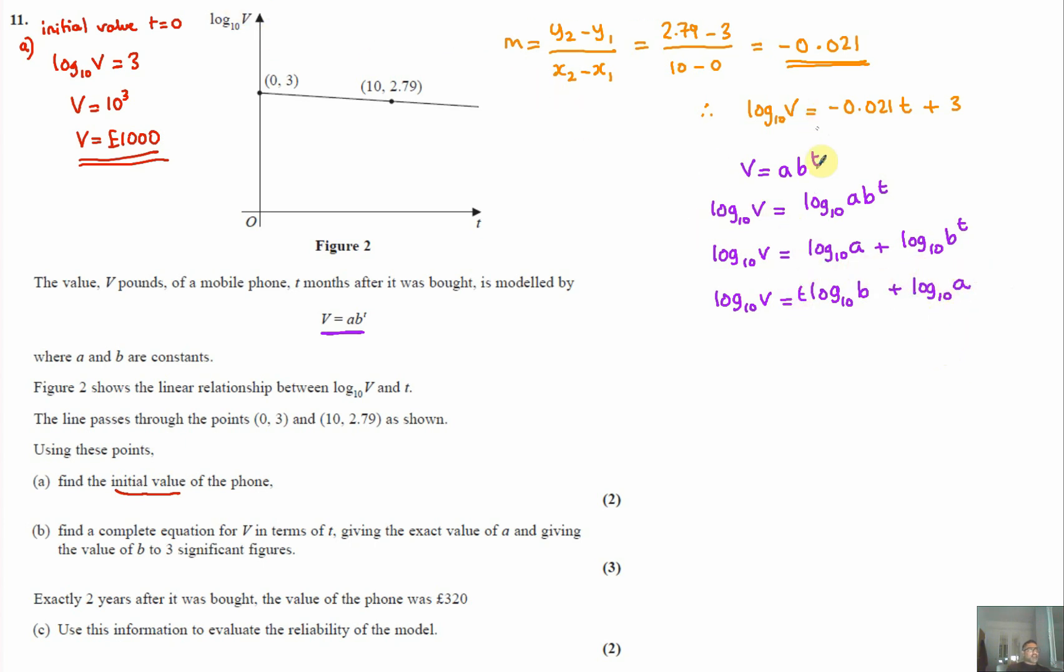Now these two equations have to be the same because we've converted this into a linear format. So first of all, let's compare the coefficient of t. In this case here that means log to base 10 b is the same as minus 0.021. So log to base 10 b equals minus 0.021.